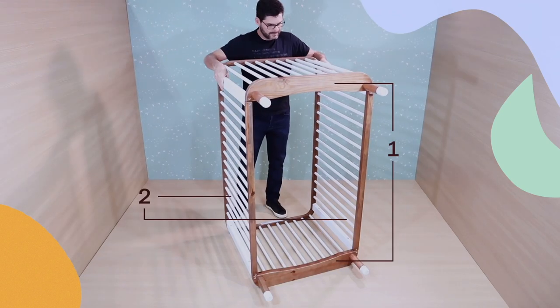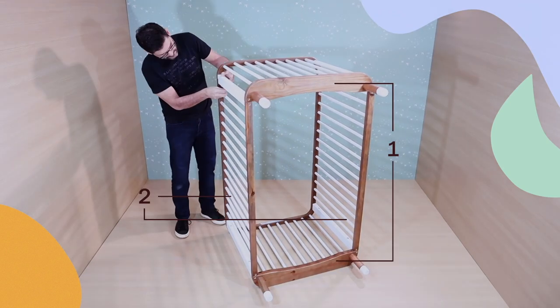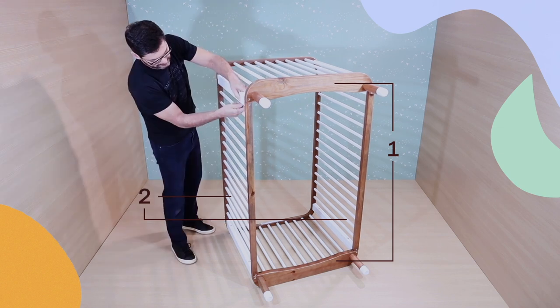Next, do the same thing for the other side, attaching the second headboard to the side panels using bolts A and washer F, just as before.